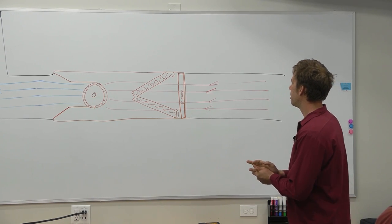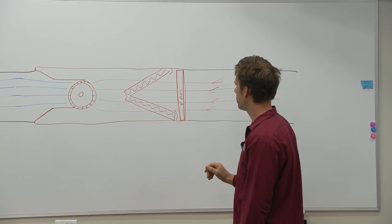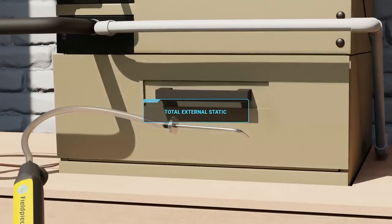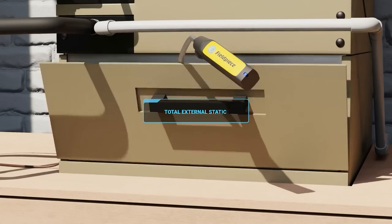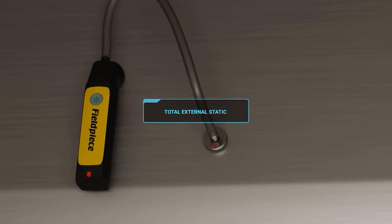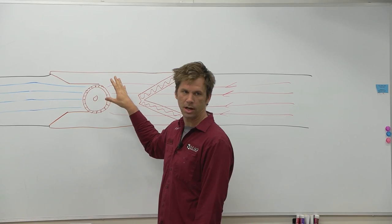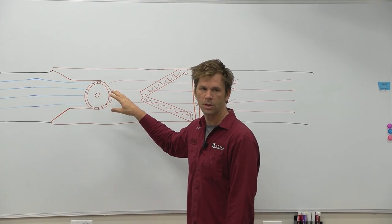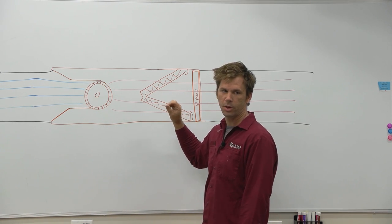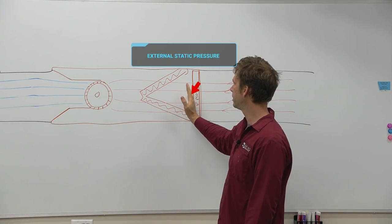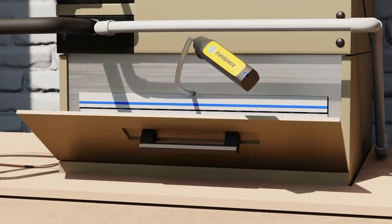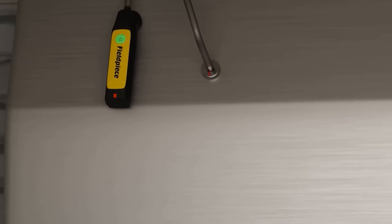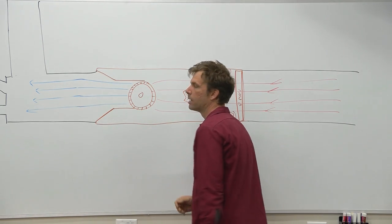As we're measuring our static pressure, we're looking for external system total external static. This is a measurement that is done to find out how well is my unit operating, how much airflow do I actually have, how much resistance is the blower fighting.